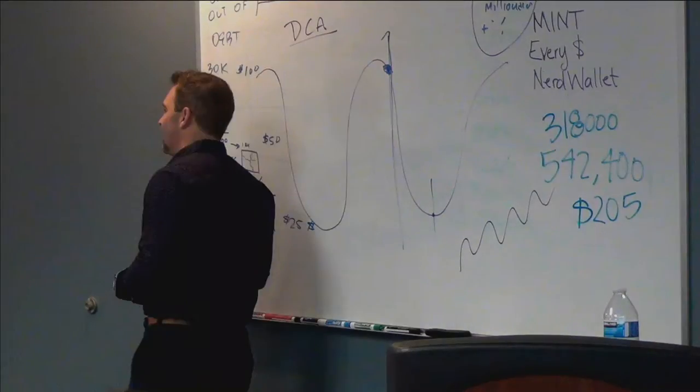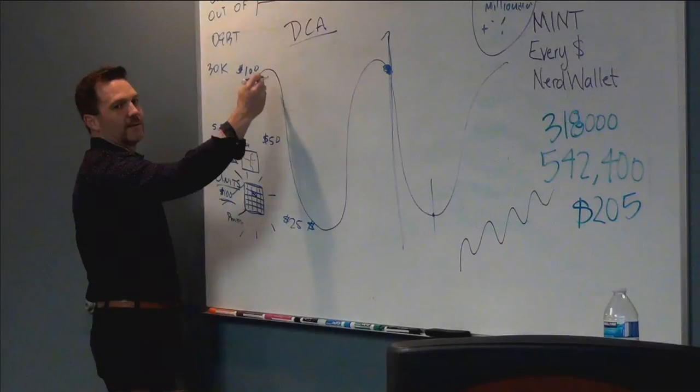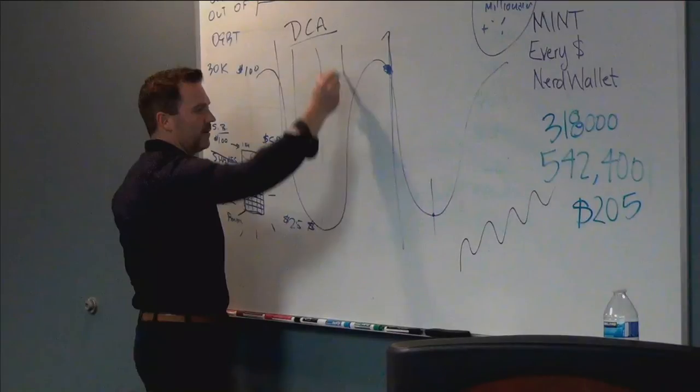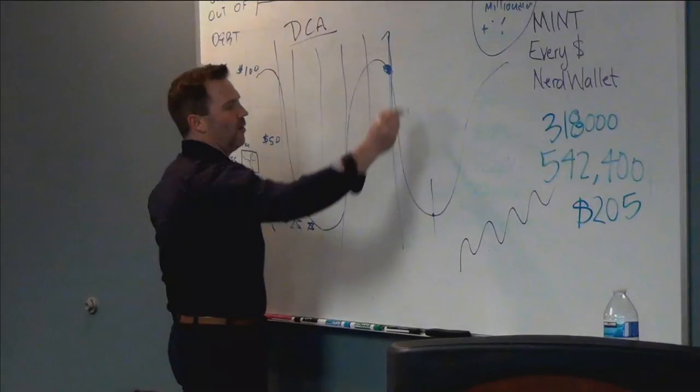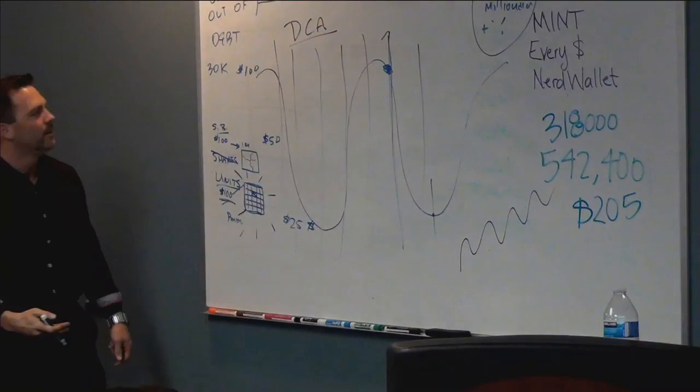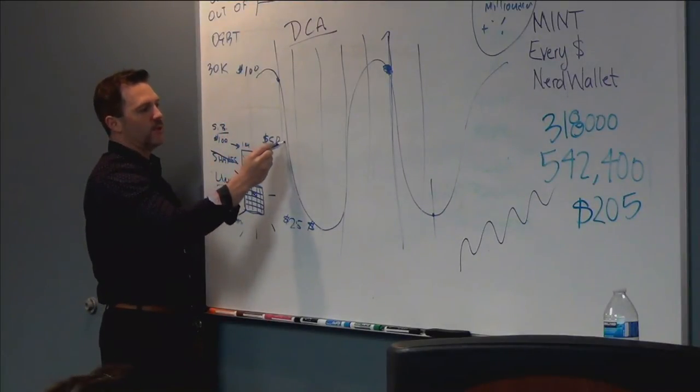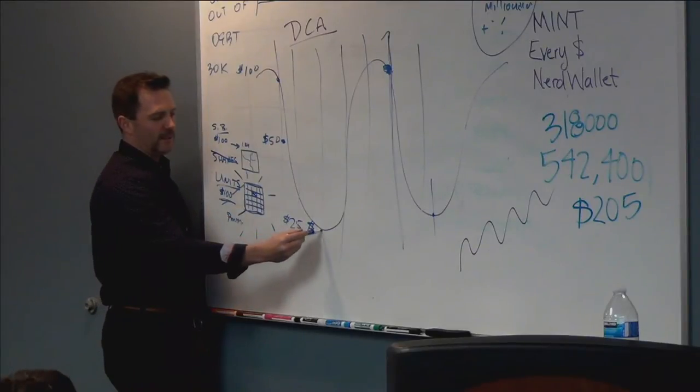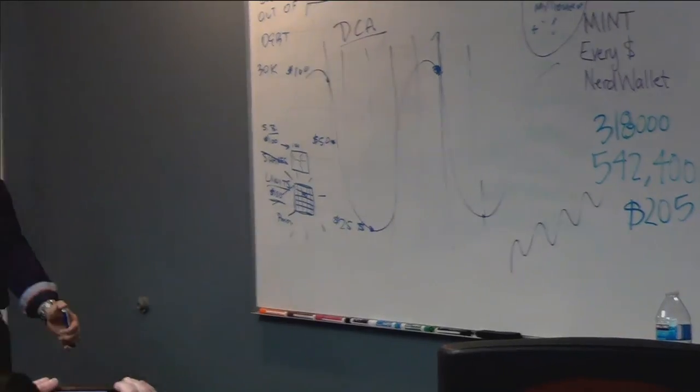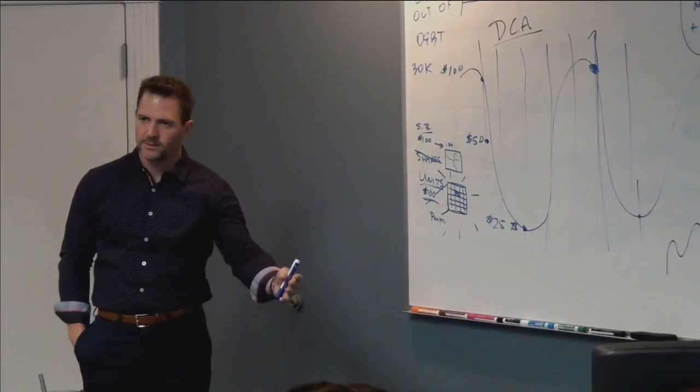But what if instead of doing that, you purchased multiple times throughout the year? And so you had a systematic approach to doing it every single month. And so what happens is you divide up that investment over a period of time, and you're going to buy one unit here, but you would buy two units here, and you would buy how many here? Four. So at the end of a year, instead of having one unit, you would have multiple units.